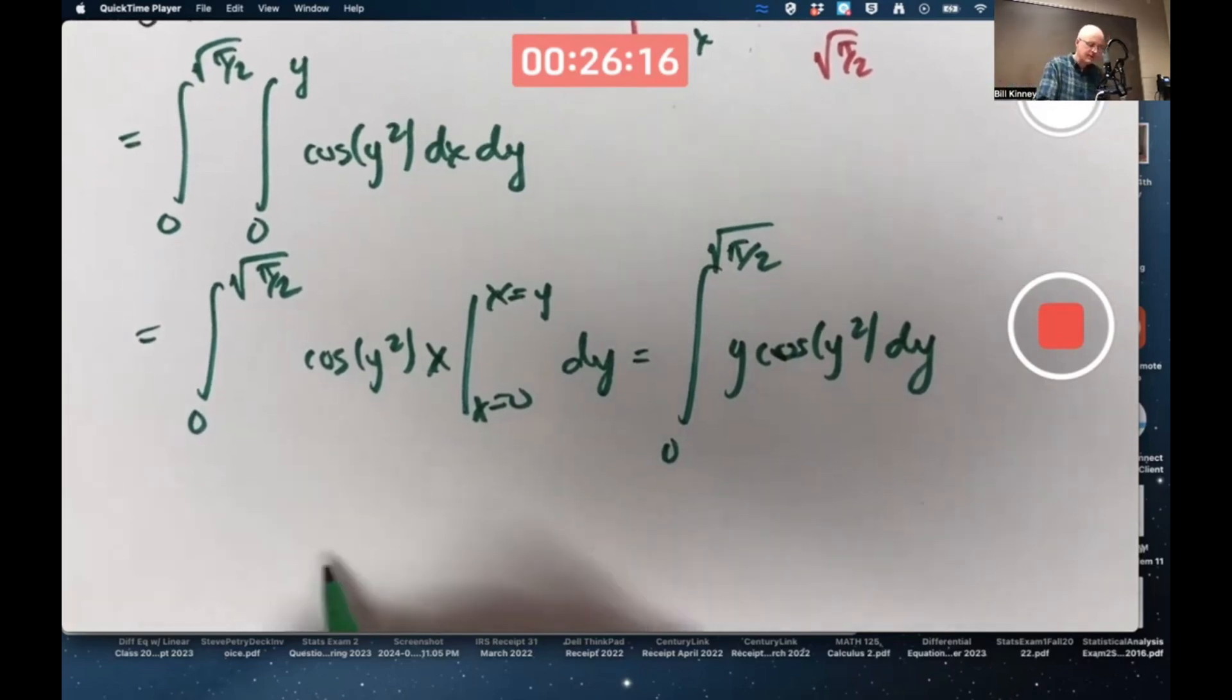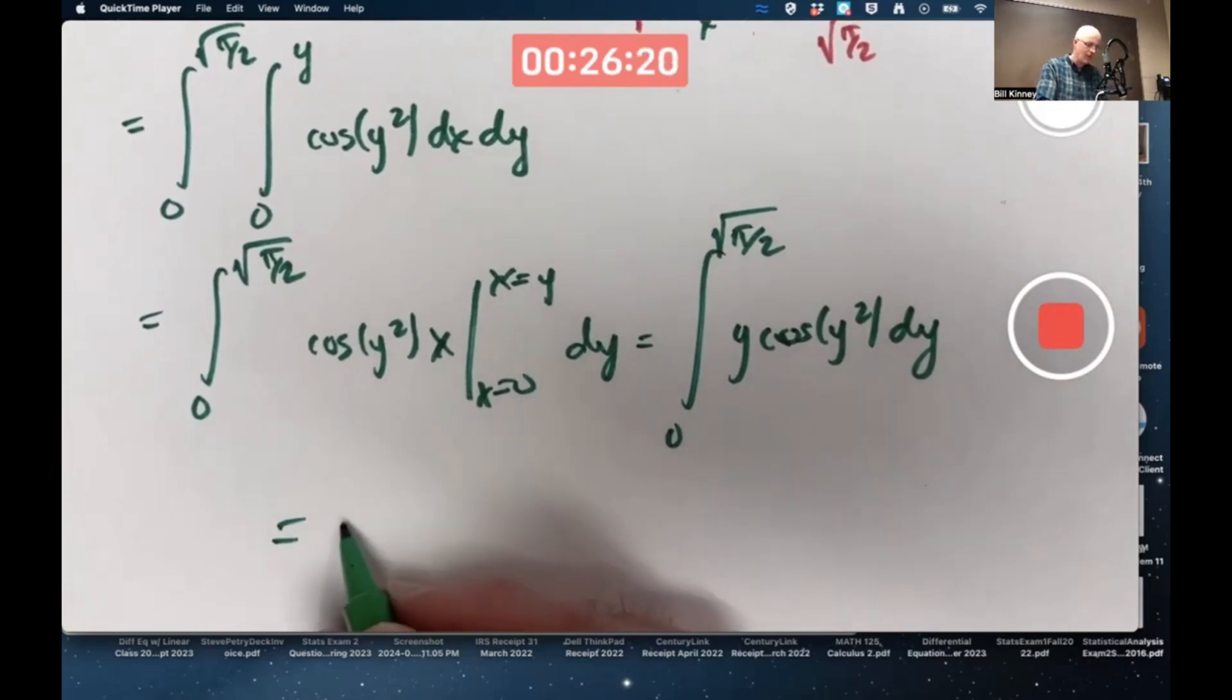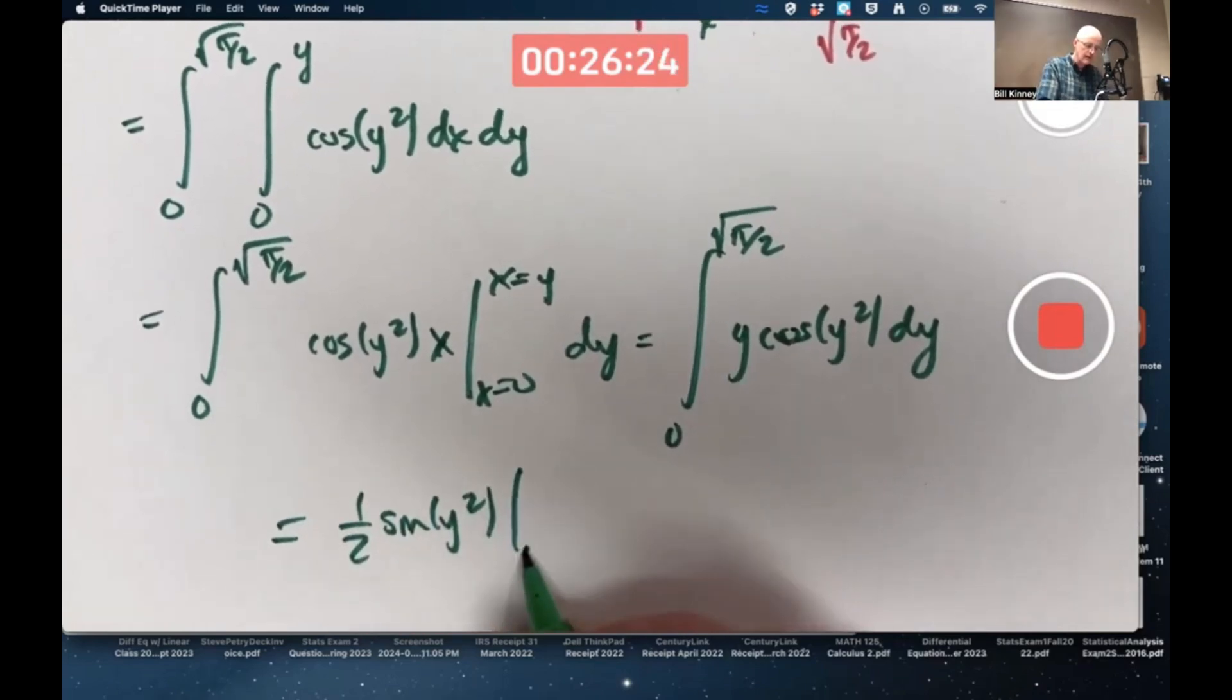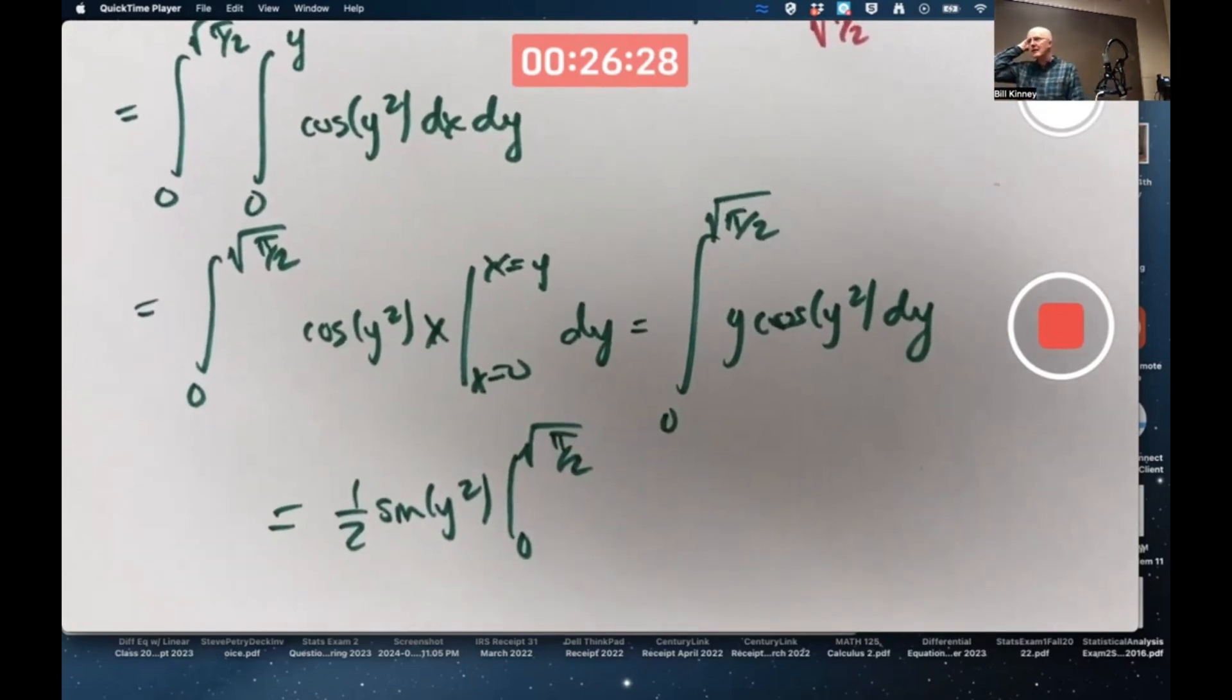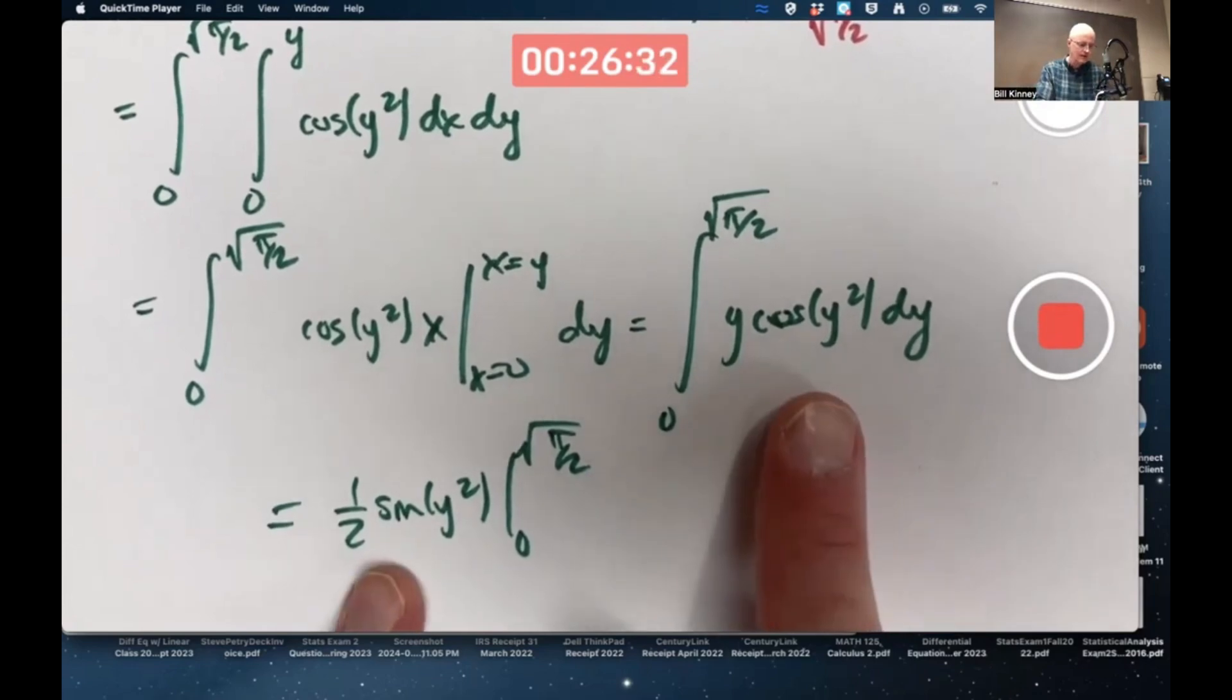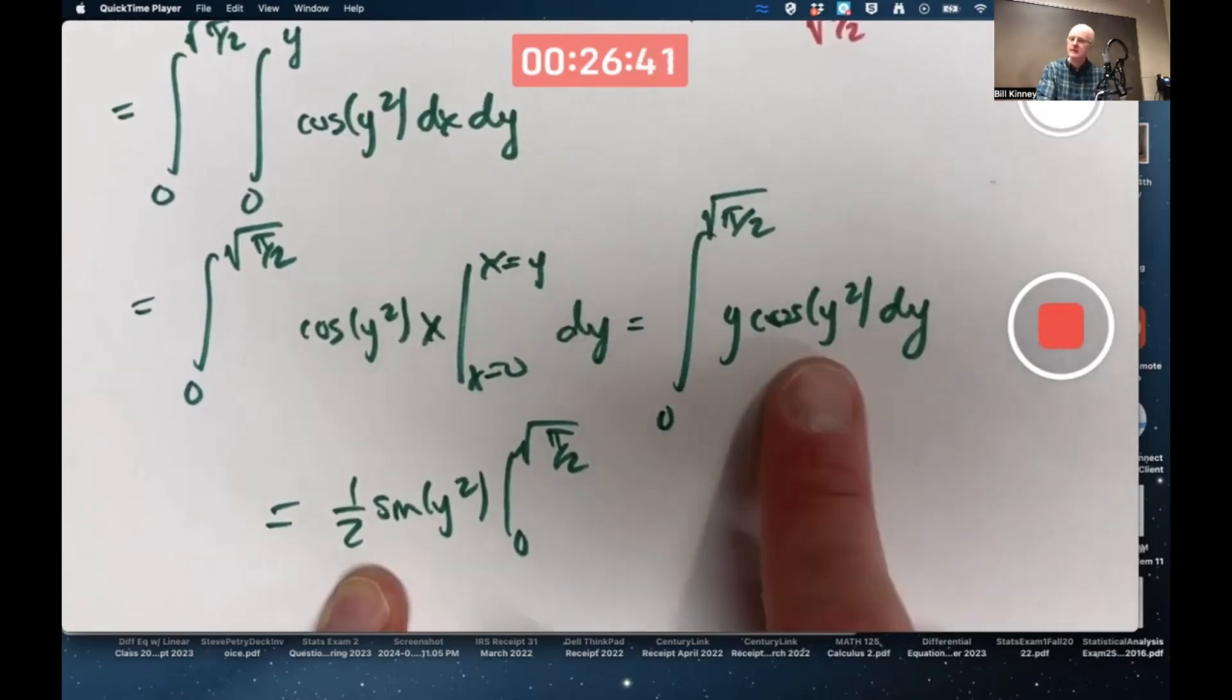In fact, I mean, you can use substitution, but you can also just guess. 1 half sine y squared, right, would be the correct guess. Think about differentiating this with the chain rule. You get an extra factor of 2y, which the two would cancel with 1 half and give you this.